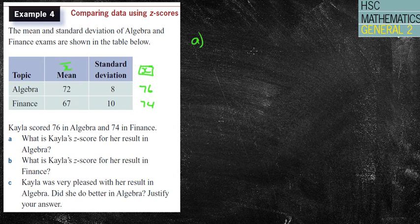So algebra, we've got z-score will equal 76 take away 72 divided by 8, which is 4 over 8, which is 0.5.